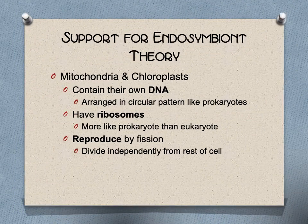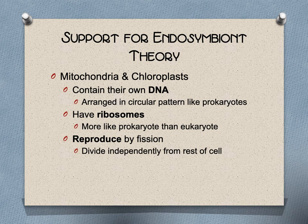Evidence for the endosymbiont theory includes that mitochondria and chloroplasts have their own DNA, they have ribosomes, and they reproduce by fission — making them one of the few organelles that can divide themselves, much like bacteria would.